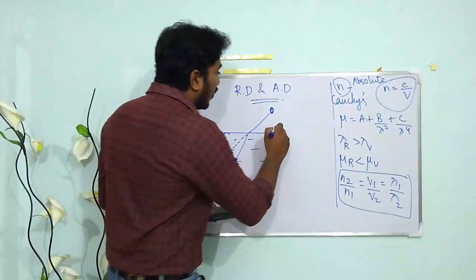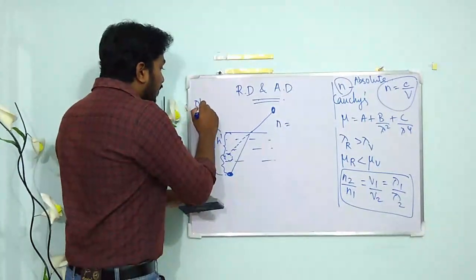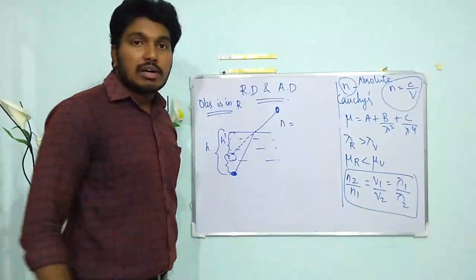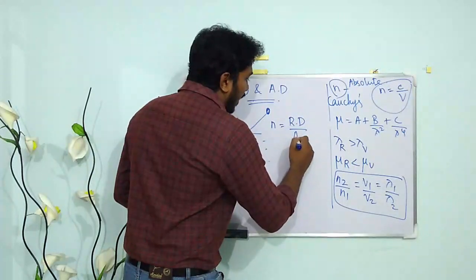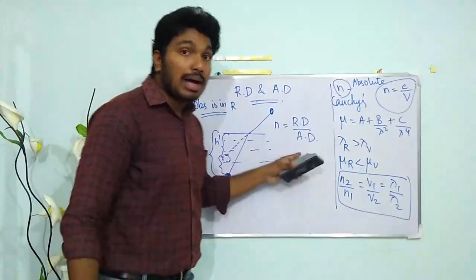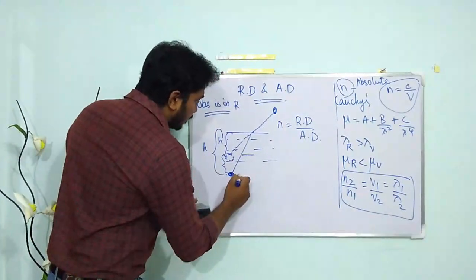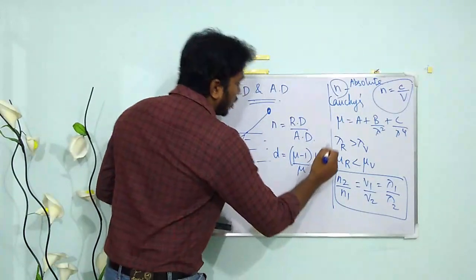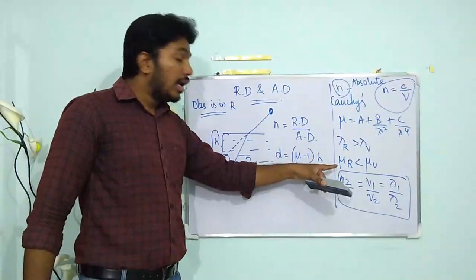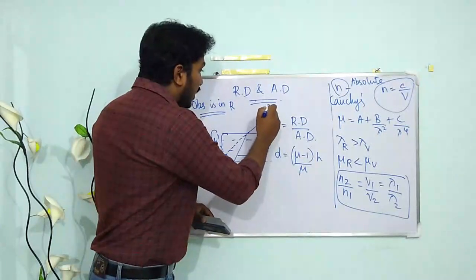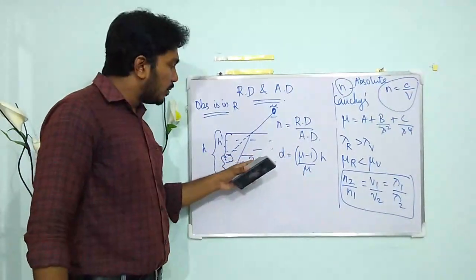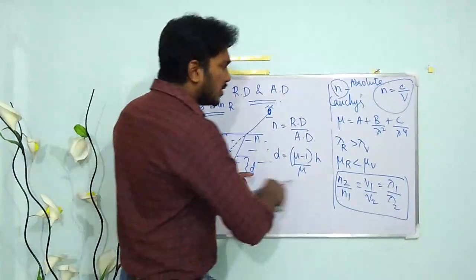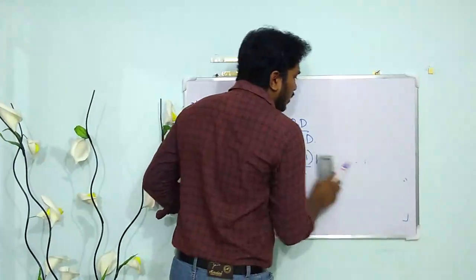Due to refraction there is a shift. h′ corresponds to the apparent depth and h to the real depth. When the observer is in the rarer medium, the refractive index equals real depth divided by apparent depth: n = real depth / apparent depth. The shift d = (μ − 1)/μ × h.